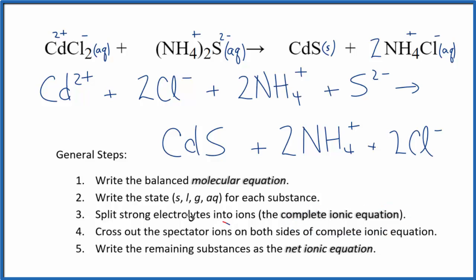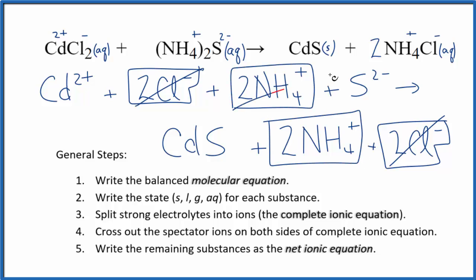Now we can cross out the spectator ions. They're on both sides of the complete ionic equation. They haven't changed, so we're not interested in them. In the reactants, we have two chloride ions right here. In the products, two chloride ions. These are spectator ions. Cross those out. Reactants, two ammonium ions, and in the products, two ammonium ions, spectator ions.